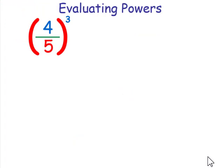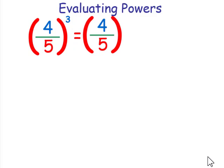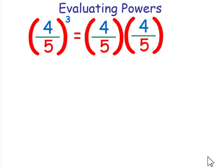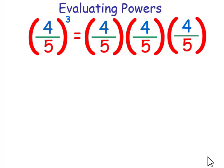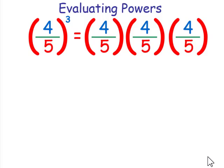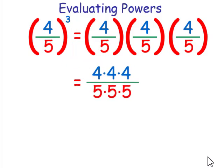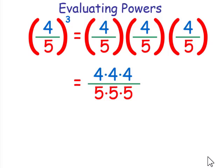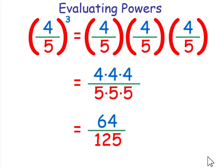When evaluating rational numbers, it works the same way. We're going to write 4 fifths as a factor 3 times. Then we just have to multiply the numerators, multiply the denominators, and the result in this case is 64 over 125.